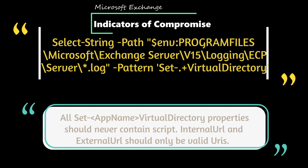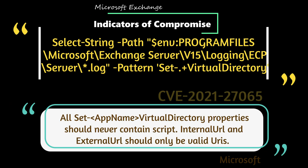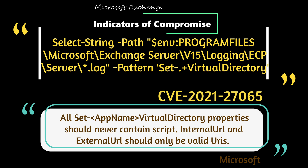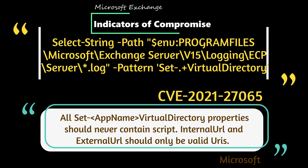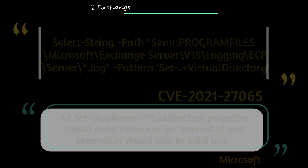For CVE-2021-27065, look in the Exchange log files for the Set-AppVirtualDirectory properties — these should never contain a script. Additionally, the internal URL and external URL should always be pointing to valid URIs.